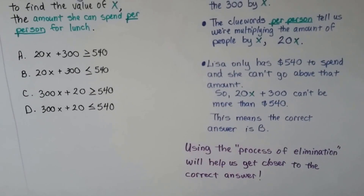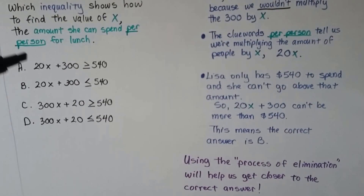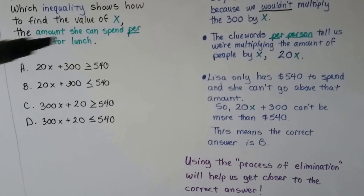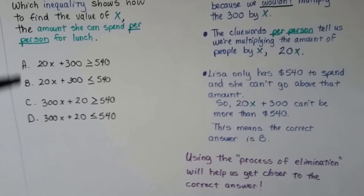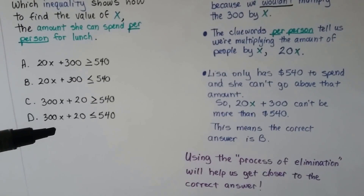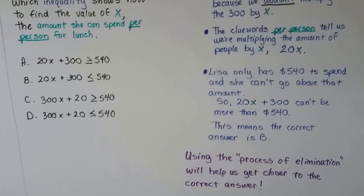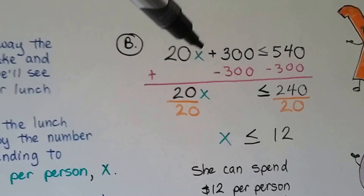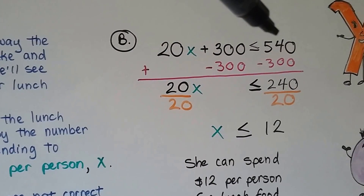Using the process of elimination helped us get closer to the correct answer. We got rid of C and D, knew it was only A or B, then looked at A and said it can't be greater than that — so it's got to be B. Instead of having a 1 out of 4 chance of getting it right, we moved it to a 1 out of 2 chance, and then honed it down even more. To actually solve the problem, we take B: 20X plus $300 is less than or equal to $540.